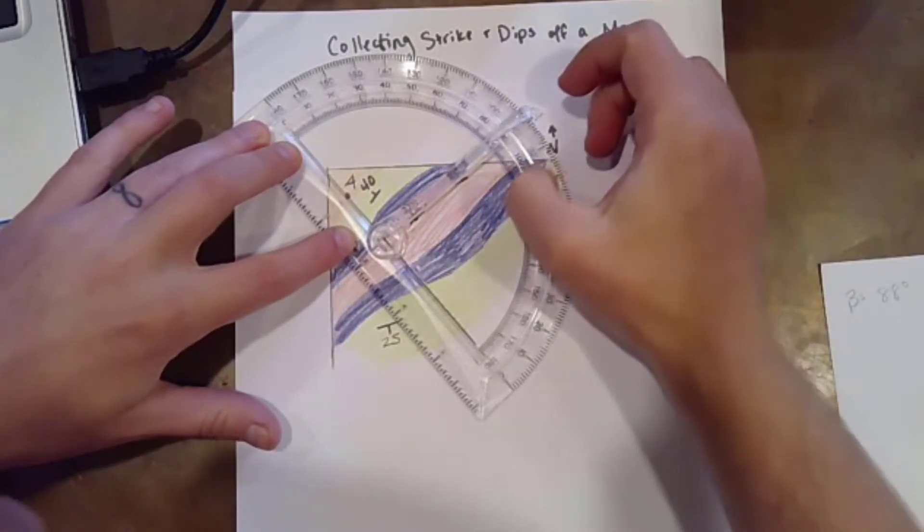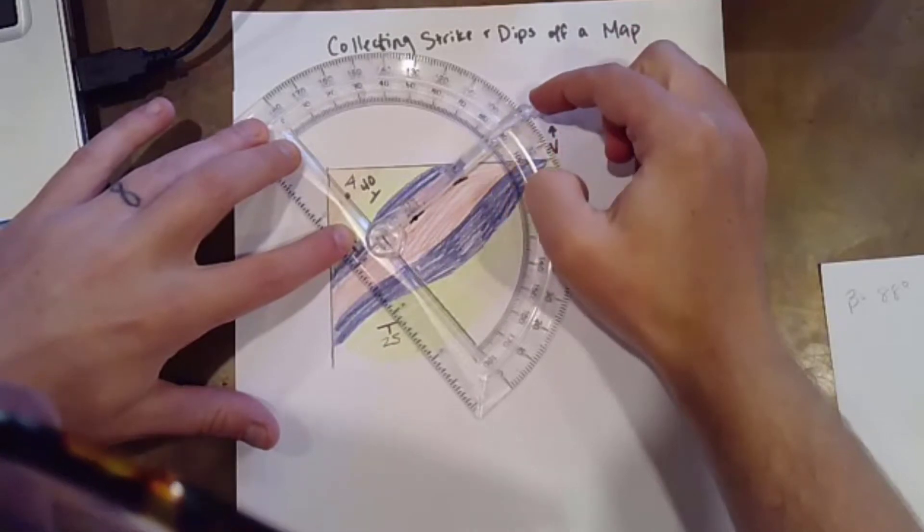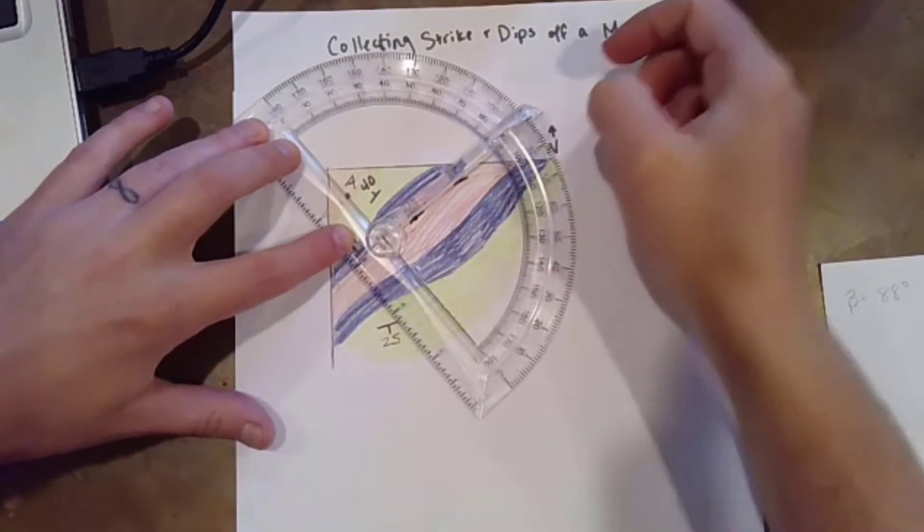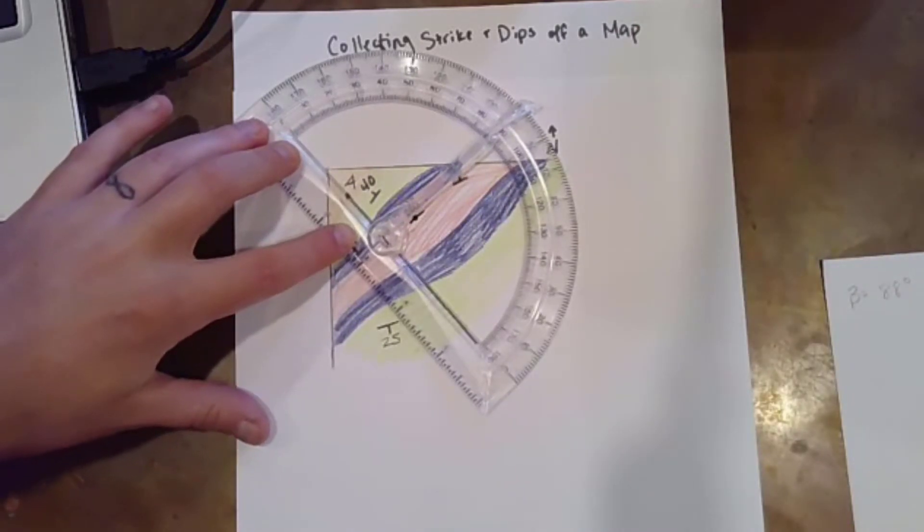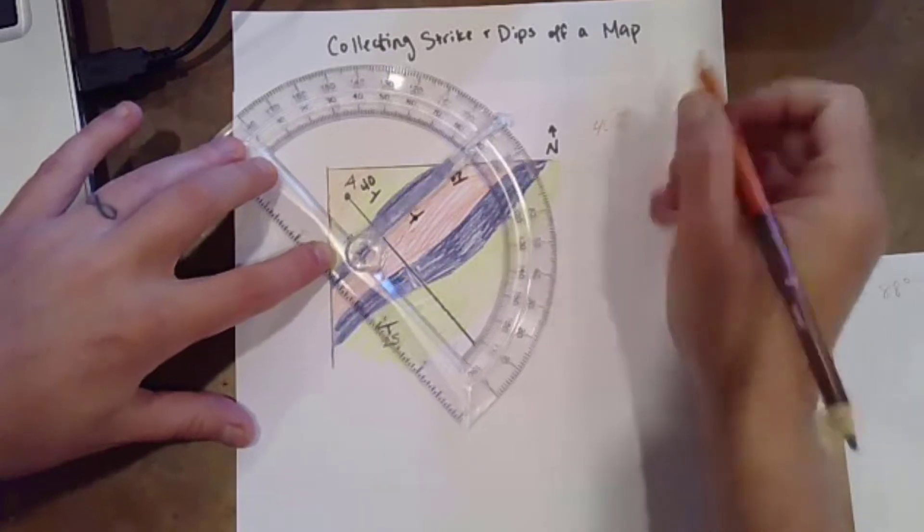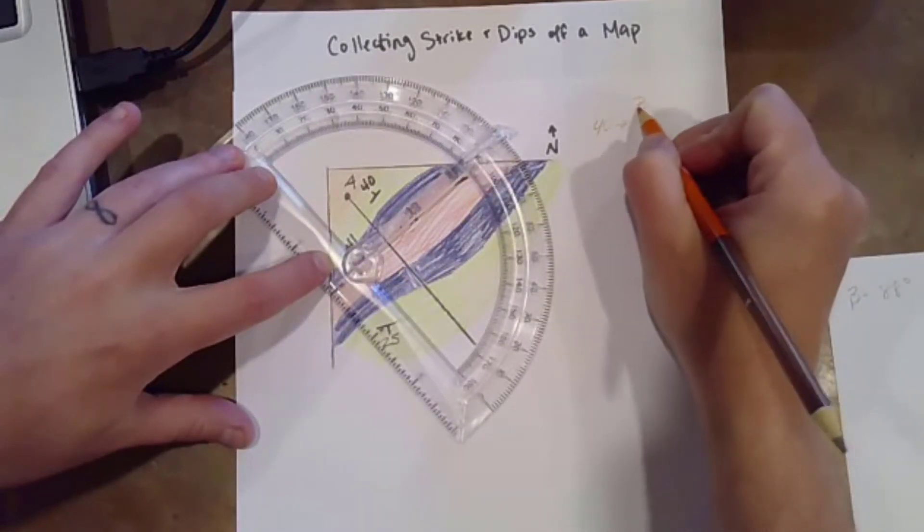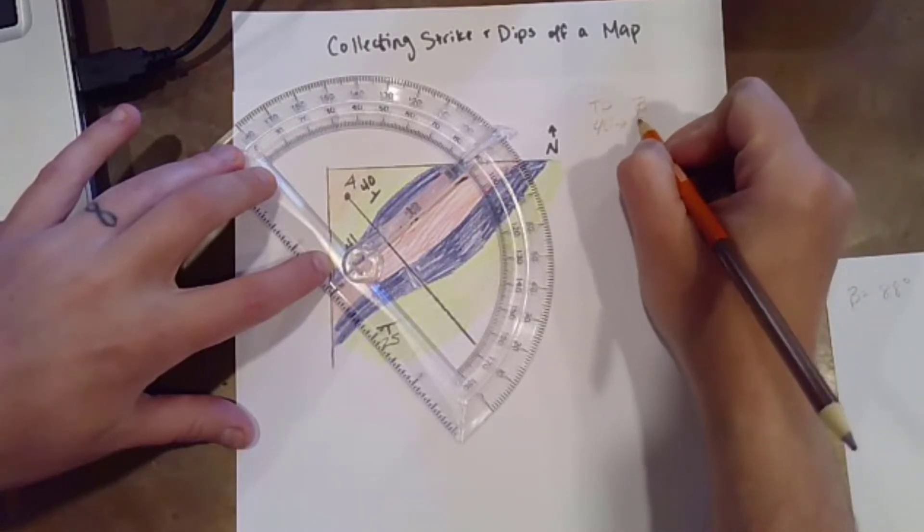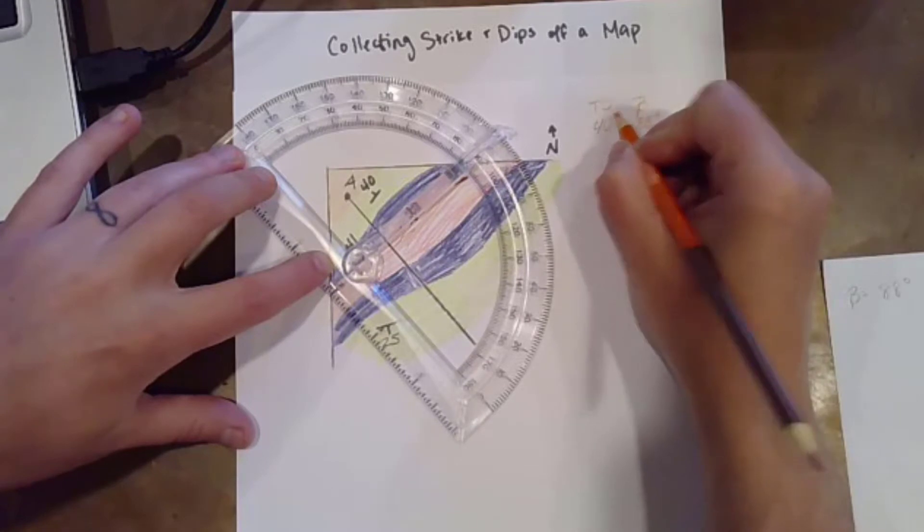I get 88 degrees. All right, so almost 90 but not 90. So I'm going to make a note of that. So the what we're going to call the beta value associated with that 40, or where 40 is the true dip, the beta value is going to be 88 degrees.